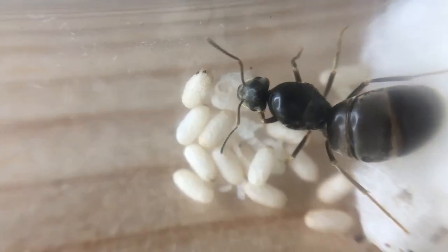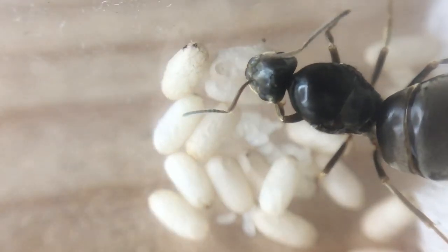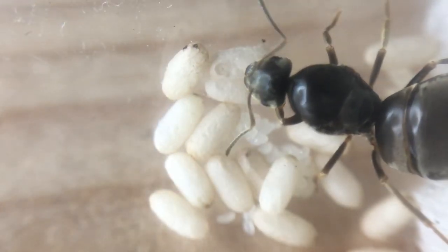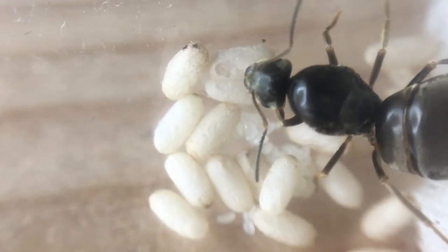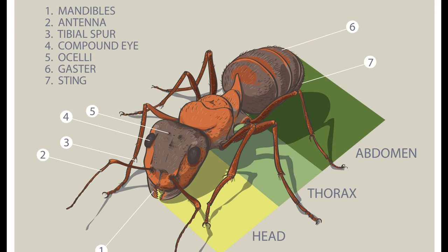They are so diverse in their different ways of sustaining the colony, and how some colonies will reach millions and some only reach 500. An ant's body will consist of three different parts: the head, the thorax, and the gaster, also known as the abdomen.